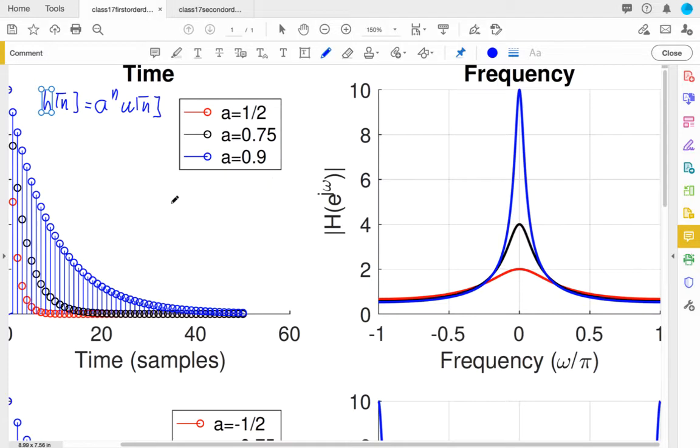The main thing to take away from this, though, is that as A gets smaller, what we see is that h[n] decays faster. But relative to its peak value, as A gets smaller, the frequency response gets relatively wider.